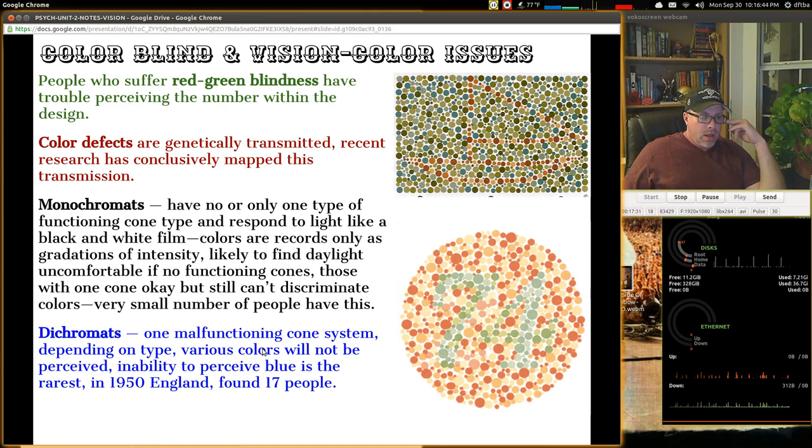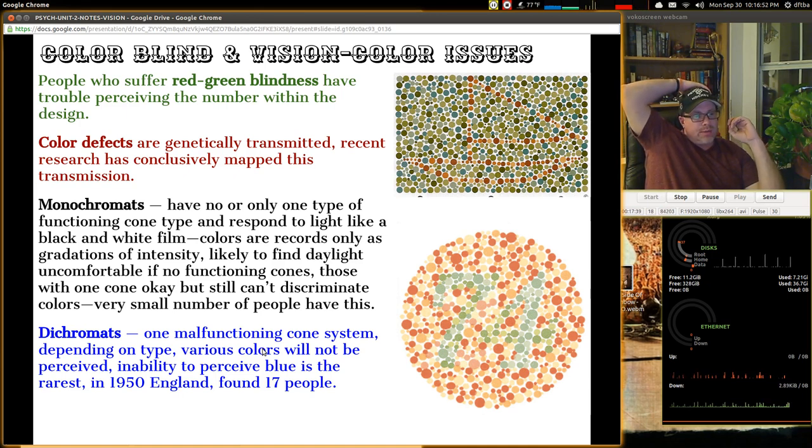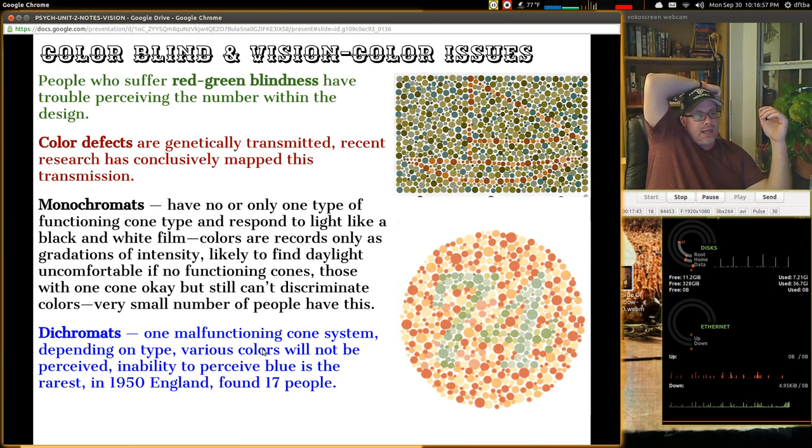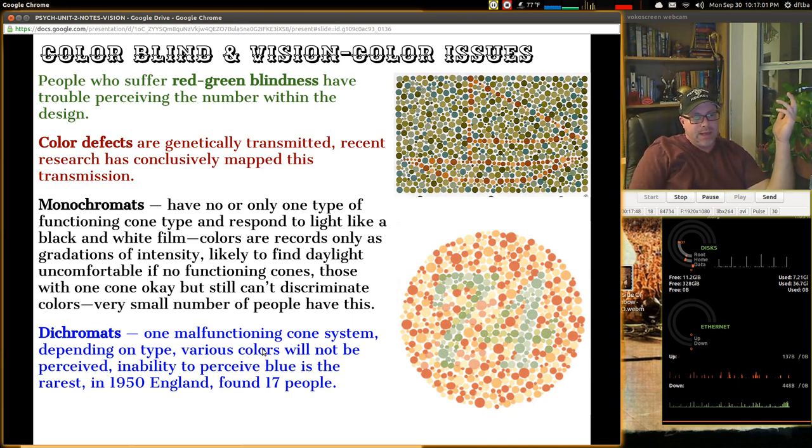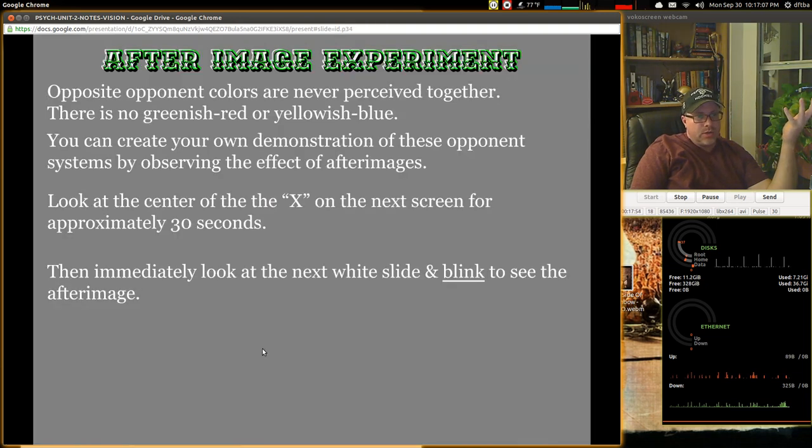Dichromats are folks that have one malfunctioning cone system. So depending on the type, various colors will not be perceived. Inability to perceive blue is the rarest. Like in 1950 in England, they went through the population and found only 17 people who had a problem with being able to see just one color.